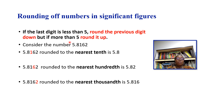Consider the number 5.8162. If we are asked to round it to the nearest tenth (1 decimal place), the first decimal digit is 8 and the next digit is 1, which is less than 5, so we round down — the answer is 5.8. If rounding to the nearest hundredth, the digit 6 is greater than 5, so we round up: the answer becomes 5.82.